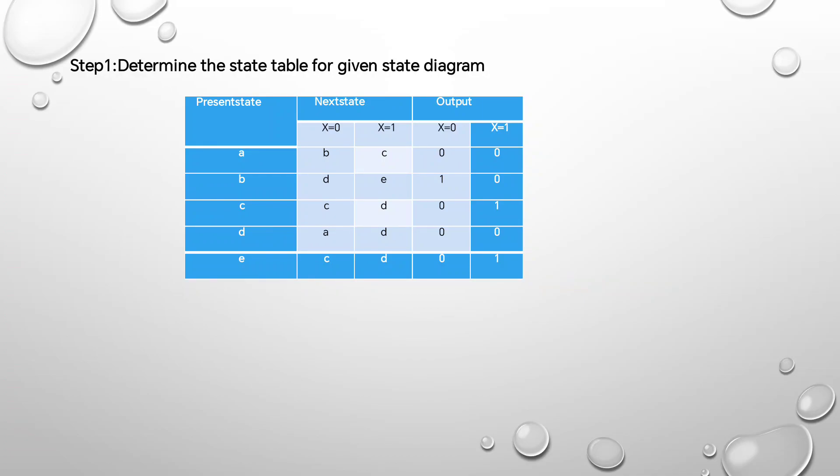If x=0, in that condition we are taking B and C; the output will be 0, 0. If D and E, the output will be 1, 0. If C and D, the output will be 0, 1. If A and D, the output will be 0, 0. If C and D, the output will be 0, 1.